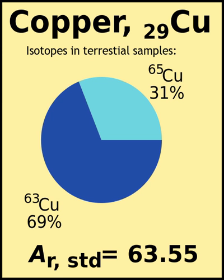When the term atomic weight is used in chemistry, usually it is the more specific standard atomic weight that is implied. It is standard atomic weights that are used in periodic tables and many standard references in ordinary terrestrial chemistry. Lithium represents a unique case where the natural abundances of the isotopes have in some cases been found to have been perturbed by human isotopic separation activities to the point of affecting the uncertainty in its standard atomic weight, even in samples obtained from natural sources such as rivers.